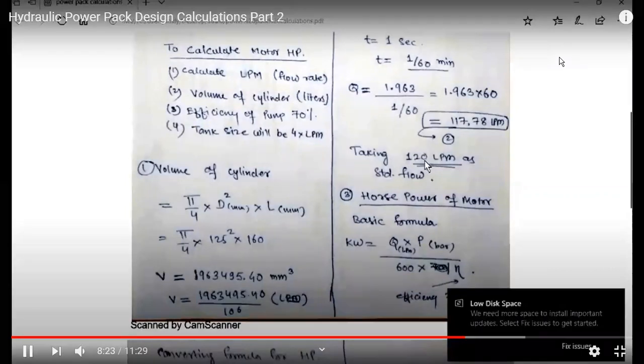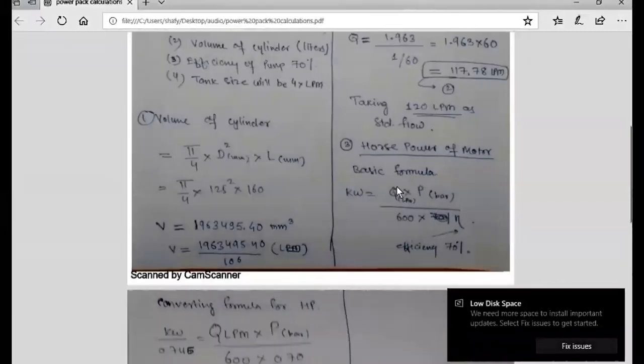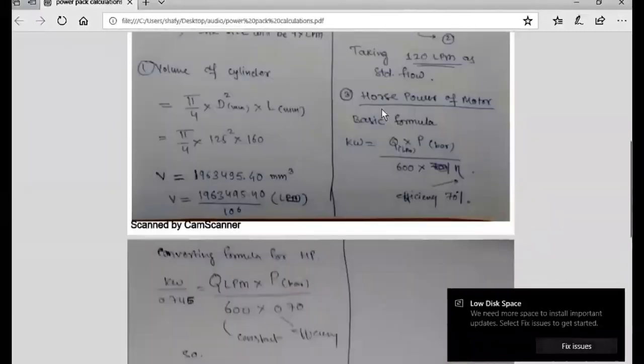Then we calculate the horsepower. Formula for horsepower in kilowatts is Q, that is liters per minute, and P is your pressure in bars. Q is the discharge in liters per minute and P is pressure in bars, divided by 60 into efficiency. Efficiency will be dependent on pump and specification as per the manufacturer's catalog.